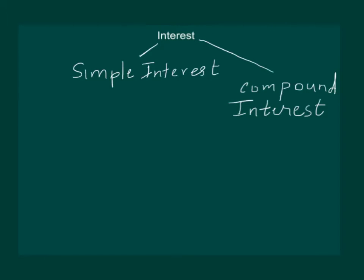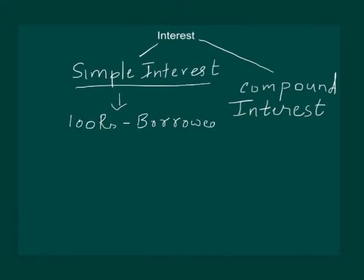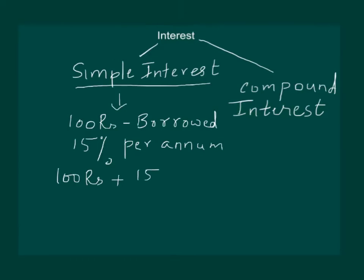To study compound interest, we first need to understand simple interest. Suppose you borrow 100 rupees from your friend and he charges you 15% per annum — per annum means per year. In the first year, the amount you will have to pay your friend would be 100 rupees plus 15% of 100 rupees.